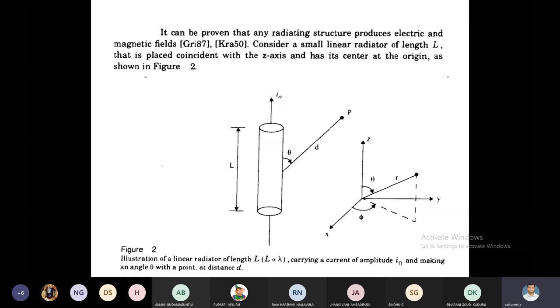That is, now we are calculating based upon the coordinates R, theta, phi. Here, whenever the current passes along the Z axis, what are the field components that are present? Then ER, Eθ, Hφ.